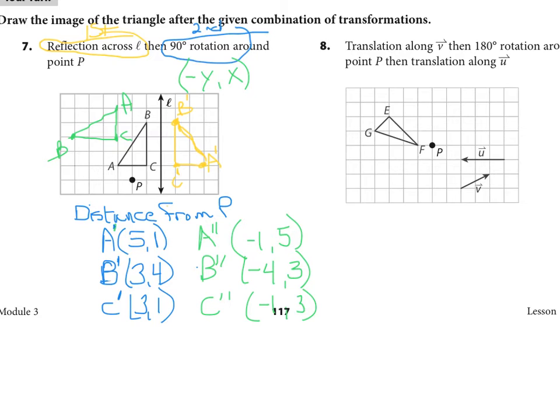So down here in the blue, I wrote the distance from P. And you can follow in red. So P, A is one, two, three, four, five, and up one. That's where I got this from. B is three, right three, up four. And C is right three, up one. So then what I did is I followed the rule. And I wrote the new coordinates for it. And then I did the same thing. The negative one means left one, up five. One, two, three, four, five. And that's where I put A. And so forth and so forth. So let's look at the next page.